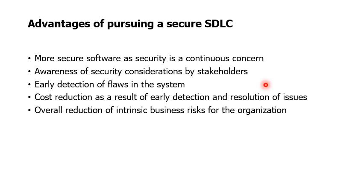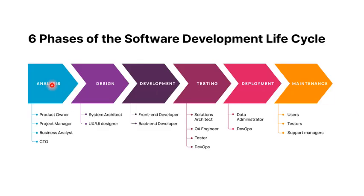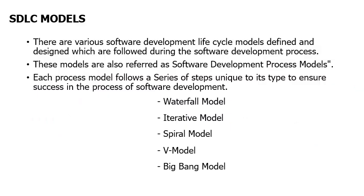The advantages of a secure SDLC include awareness of security considerations by stakeholders, early detection of issues, and cost reduction. The six phases of the software development cycle are: analysis, design, development, testing, deployment, and maintenance. Different types of models exist — within the syllabus the waterfall model is covered, but there are also iterative, spiral, V-model, and big bang models. This concludes the topic of software engineering principles and the SDLC model. Thank you.